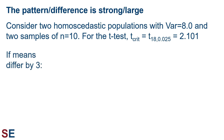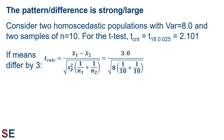Let's look at when the population means differ by 3. The t-calculated equation for a two-sample homoscedastic t-test is the one shown, and we'll use this same equation for all our examples. If the means differ by 3, our t-calculated value is most likely going to give us a difference of 3 in the numerator; in the denominator, the pooled variance will be 8 and the sample sizes of 10 go into the equation as shown. Calculating this out gives a t-calculated value of 2.372, which is larger than the critical value of 2.101, and we would correctly reject the null hypothesis of equal population means.